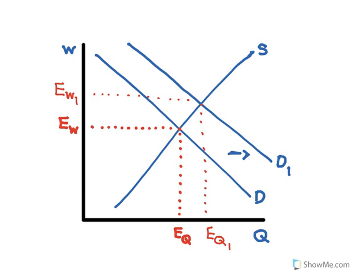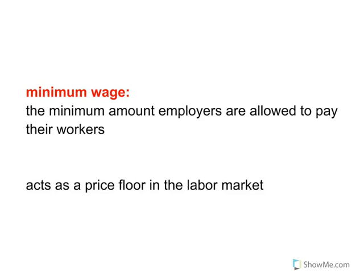Now, suppose we were at EW here, and let's say that the government notices there's a lot of workers who just can't live off that wage. So what could you do? Well, you could impose something I think a lot of us are familiar with. We hear it about in the news sometimes. You could impose a higher minimum wage.